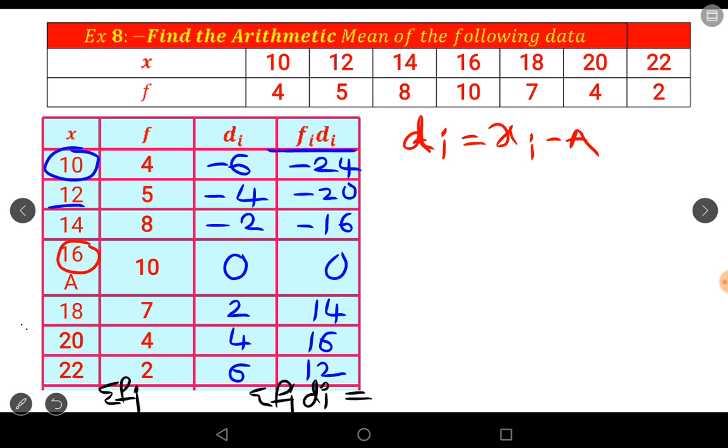Sigma f_i: 4 plus 5 is 9, plus 8 is 17, plus 10 is 27, plus 7 is 34, plus 4 is 38, plus 2 is 40. Sum equals 40. Here sum the positive values and sum the negative values. First, add the negative values: the sum of three negative values is minus 60, plus sum of positive values is 42. So their sum is equal to minus 18.